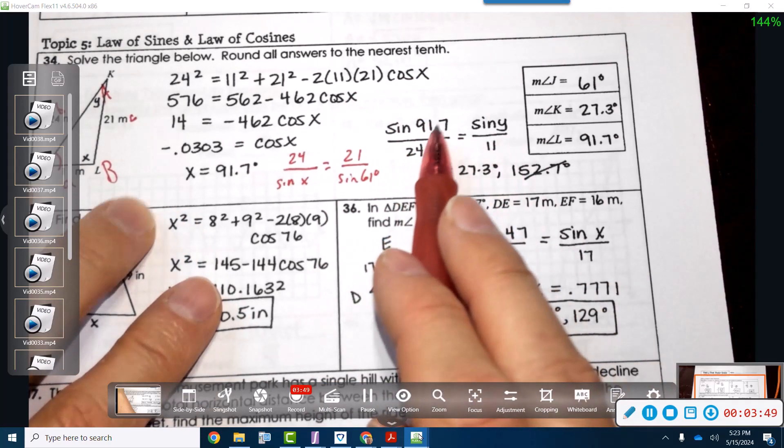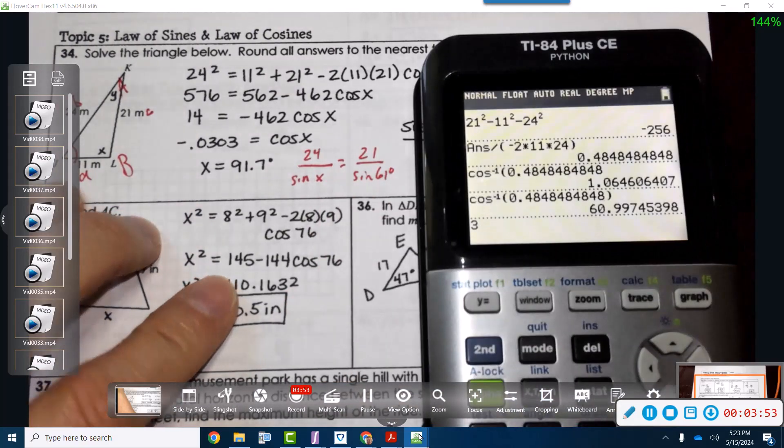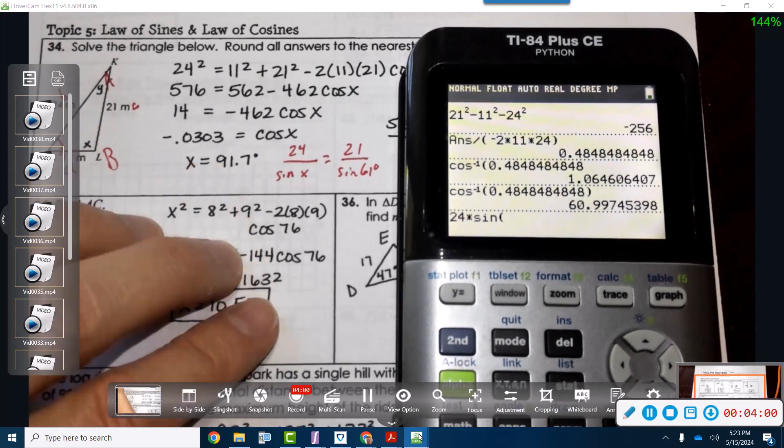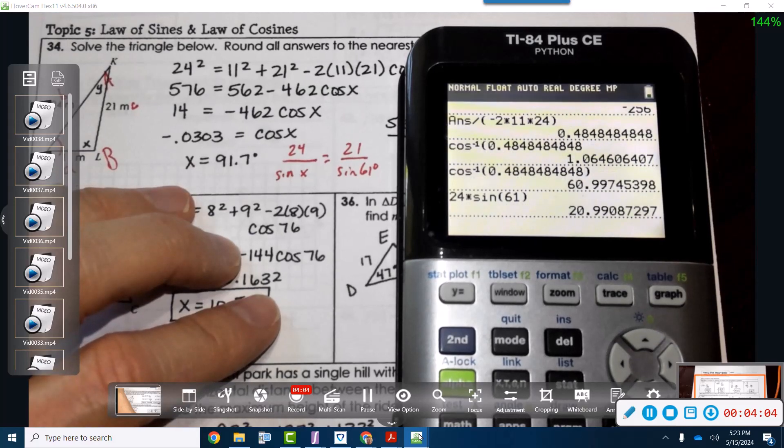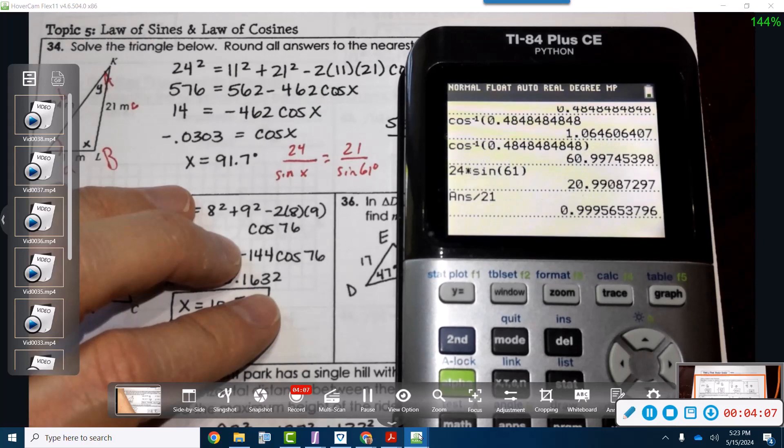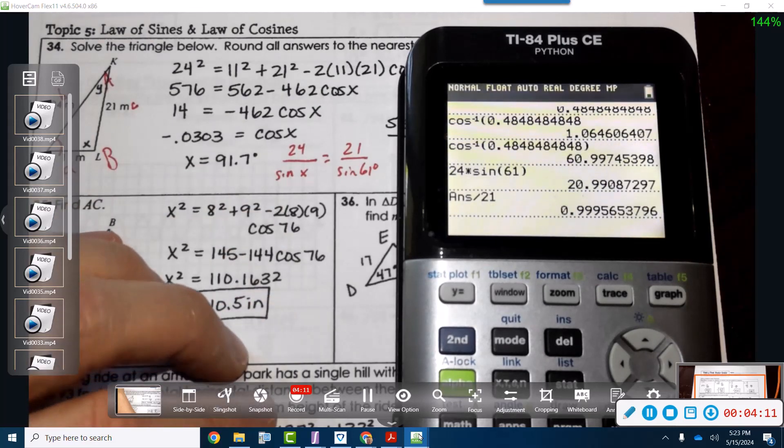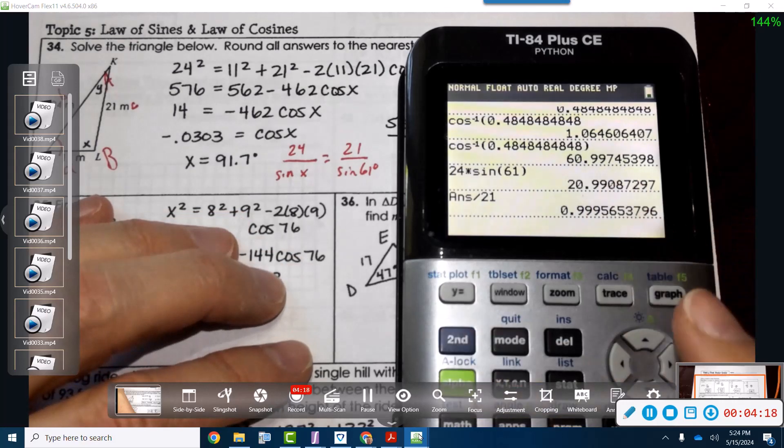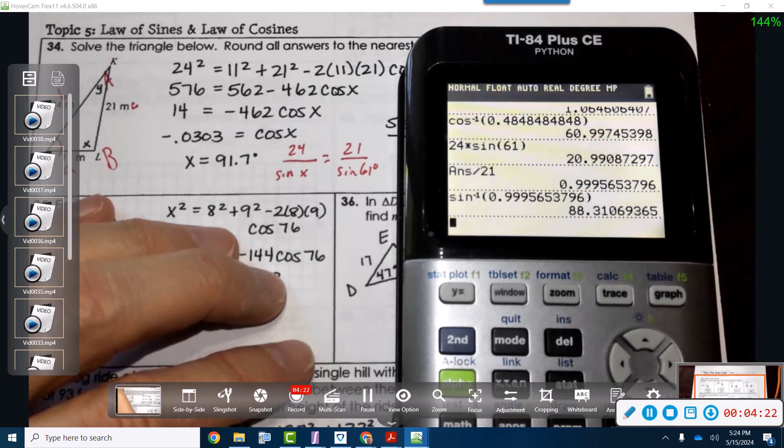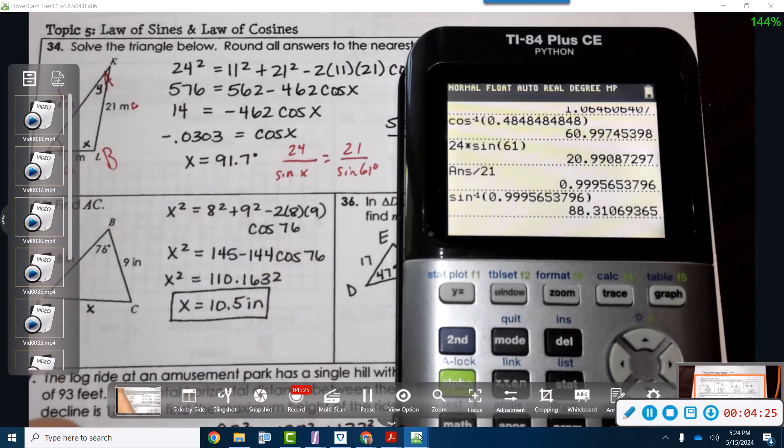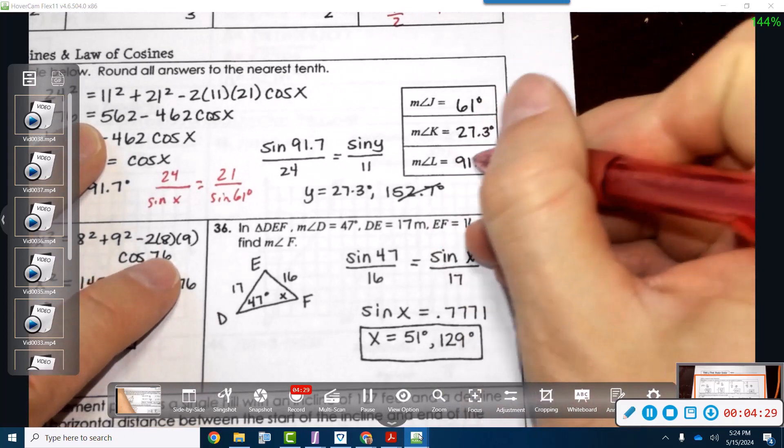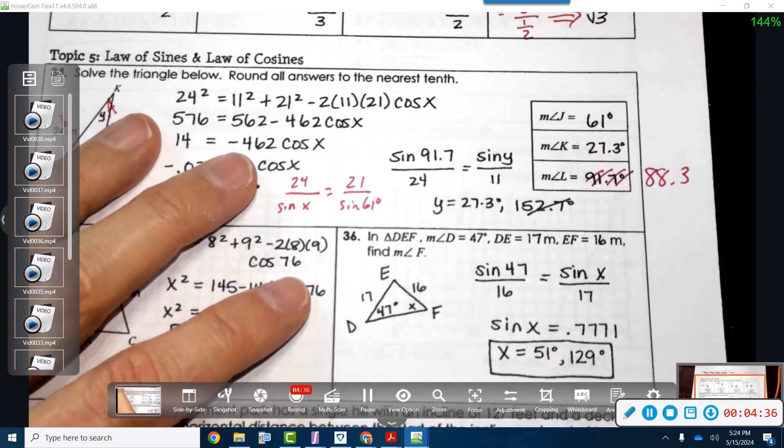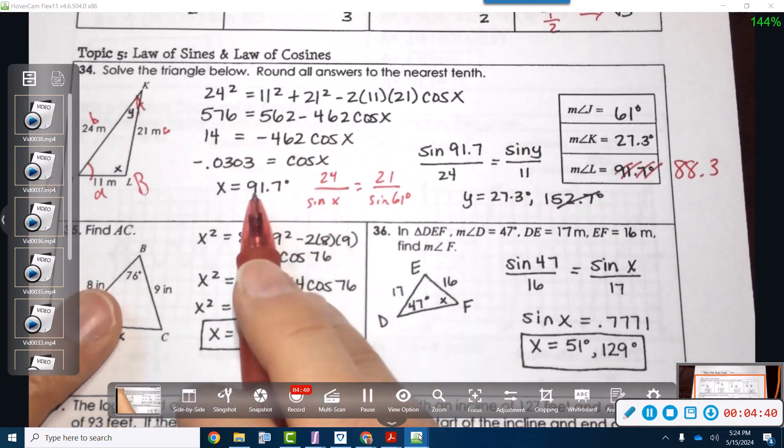So here, I'm going to do 24 times the sine of 61 equals that. Then that gets divided by 21. I get almost one. So almost one. So I need to do the arc sine of that. So arc sine of this guy is 88.3. Now this is actually what Yona got. So this is wrong because when he showed it to me, it makes complete sense. And I don't know where they use the law of cosines here to get 91.7.